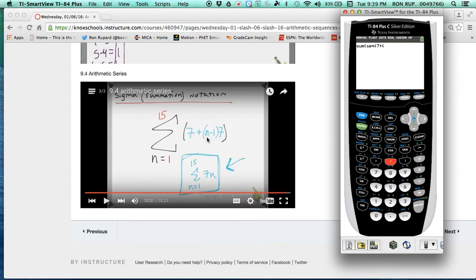Now you're going to put this explicit formula here. So I'm going to put that 7 plus parentheses. And to make the N, you could do alpha N. See how that N is right there? Minus 1, parentheses, 7.